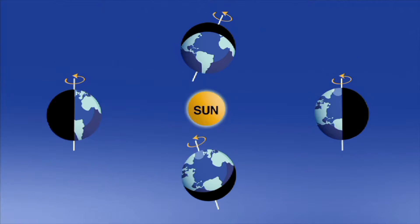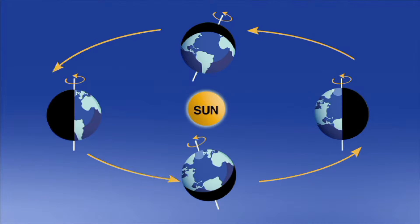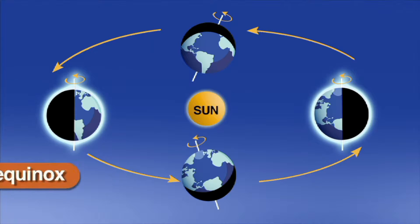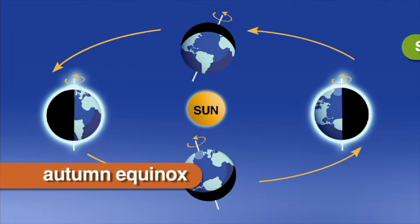During Earth's journey from summer to winter solstice and back again, it passes a point where the Earth is not tilting towards or away from the Sun, because of its position in orbit. These days are the autumn and spring equinoxes.